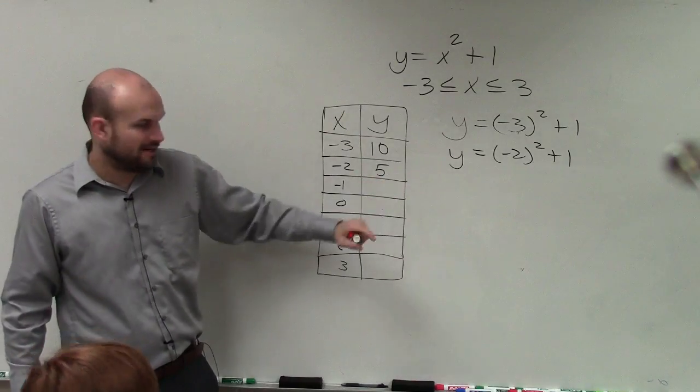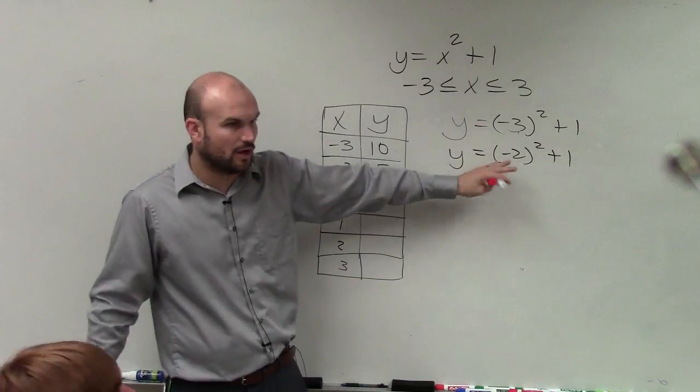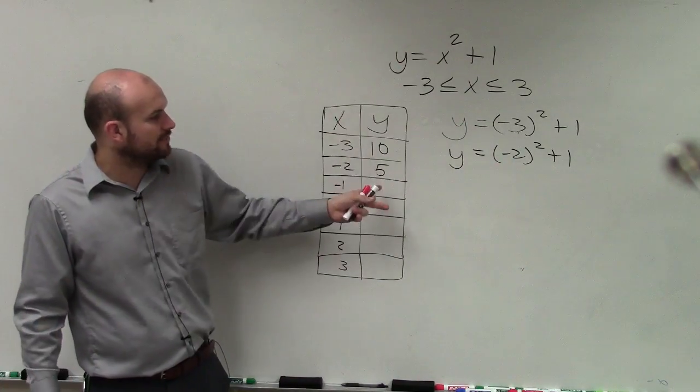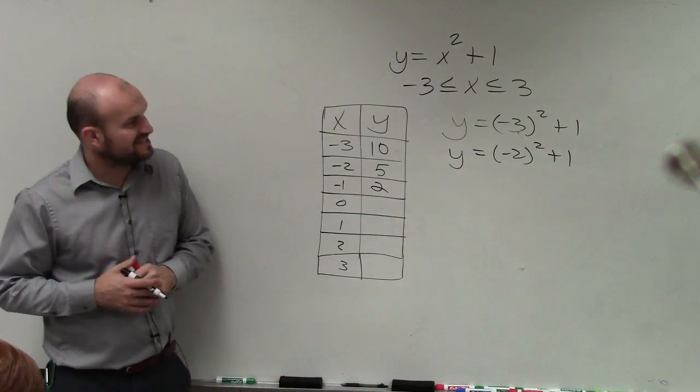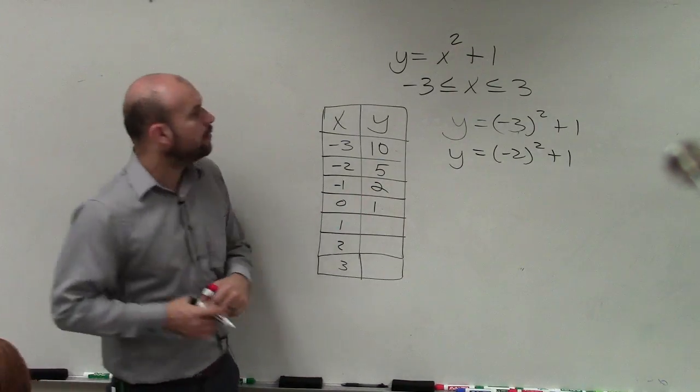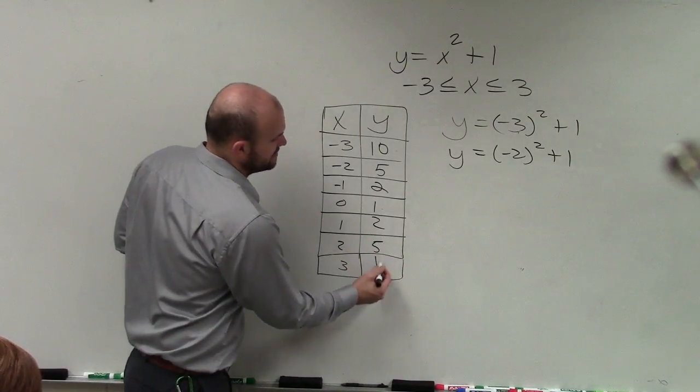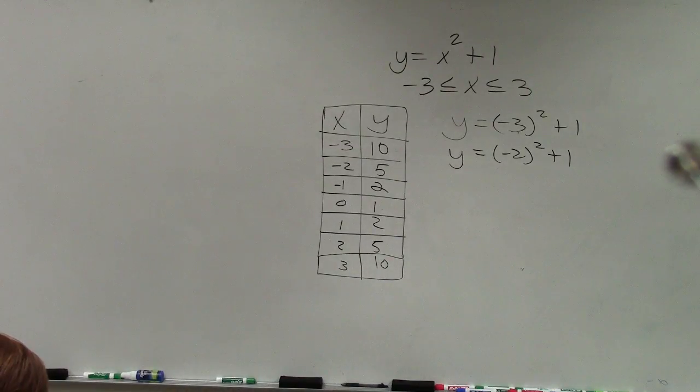Then you just continue on. However, guys, you don't need to show your work for all of these. Because once we get through this, negative 1 squared is positive 1 plus 1 is 2. 0 squared is 0 plus 1 is 1. 1 squared is 1 plus 1 is 2. And hopefully you guys can see the pattern. You guys can finish it up. OK? So that is what one group is going to be doing, or one station.